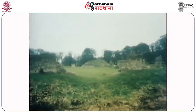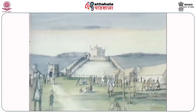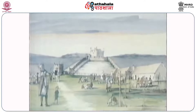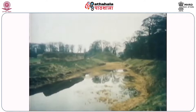This is Berkhamsted Castle in Hertfordshire, a reminder today of those troubled times. Although little of the original castle has survived, we can imagine how it looked when it was built shortly after the Battle of Hastings. Like many Norman castles, it began as a wooden fortress, built as fast as possible with the materials that could be found nearby. It was surrounded by a defensive ditch, which we can still see today, and this had to be dug by hand. Within the ditch, an earth bank originally topped by a wooden stockade enclosed a courtyard called the Bailey.